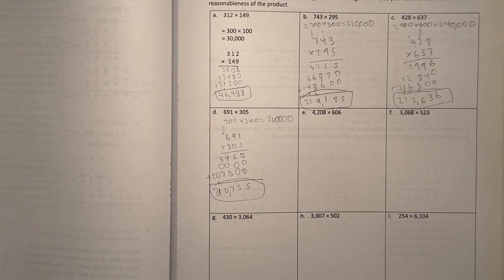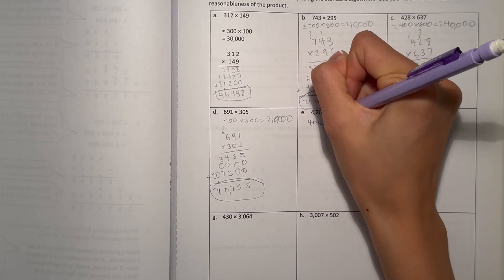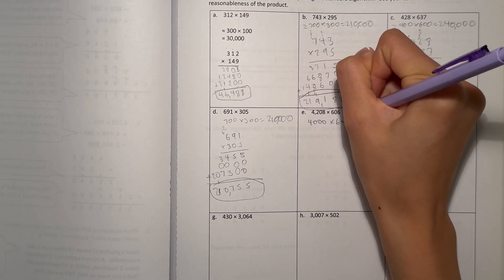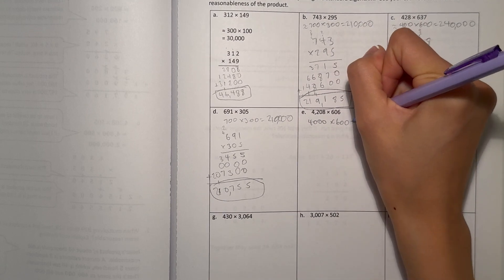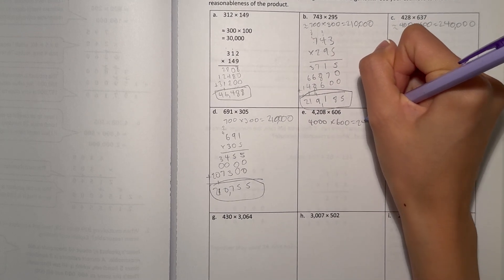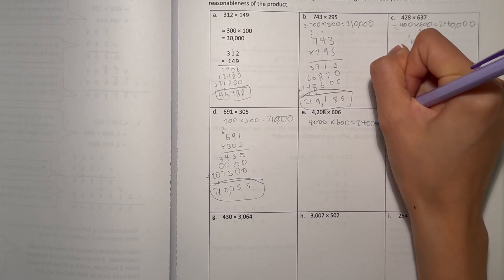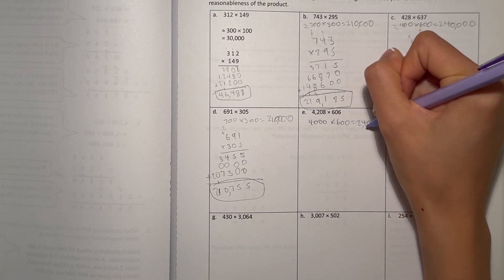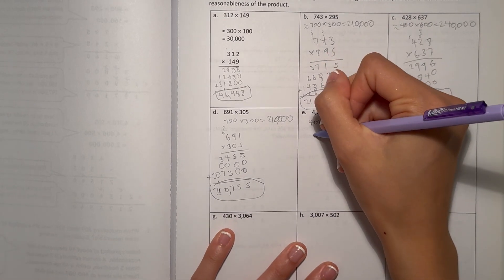E. 4,208. We'll round to 4,000 times 600, because 600 is 6. Equals 4 times 6 is 24. And now add the zeros. That's 2,400,000. So now let's do our actual math.